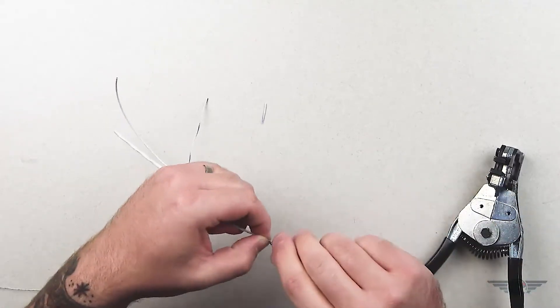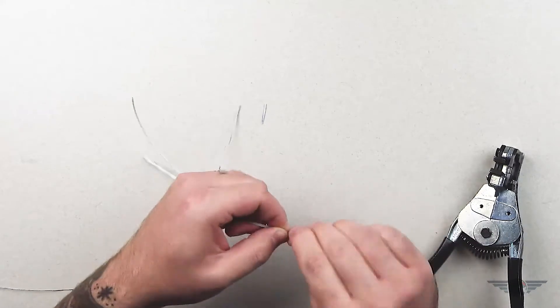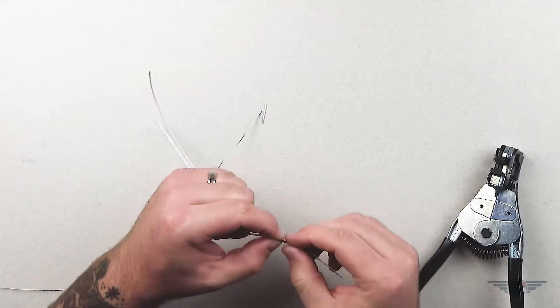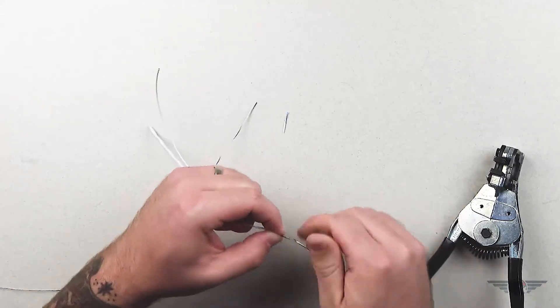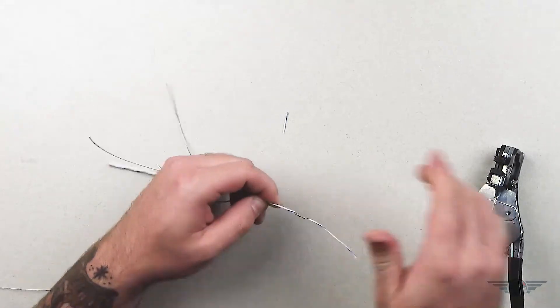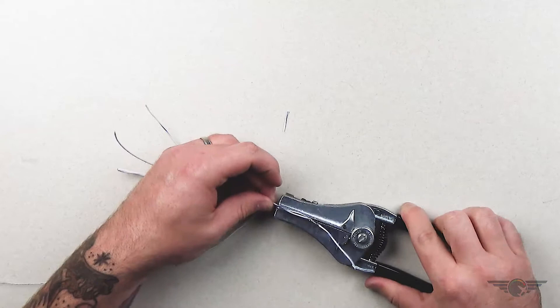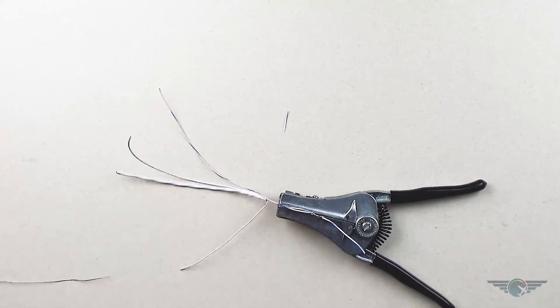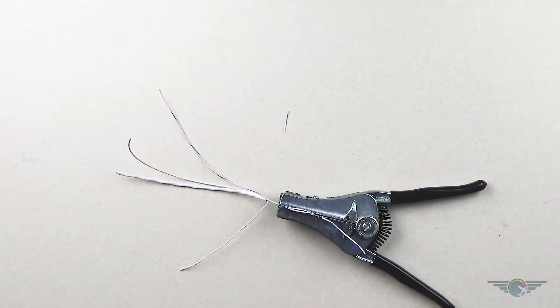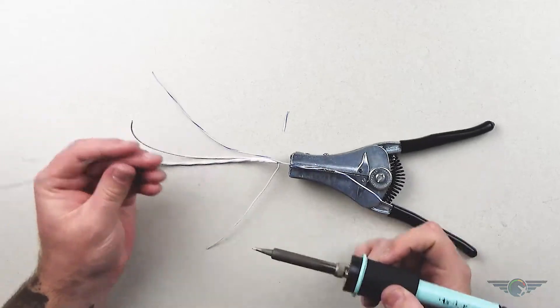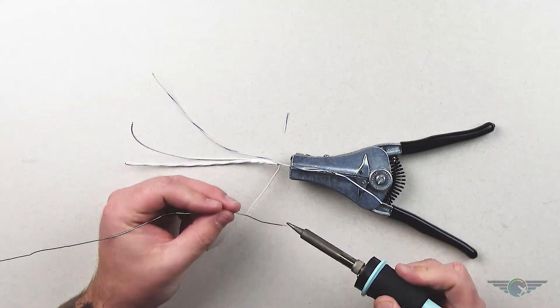So twist them up and kind of smooth those out a little bit. Make it look nice. And then again, we're just going to solder. So I've got my wire strippers here. Grab my soldering iron and same process.